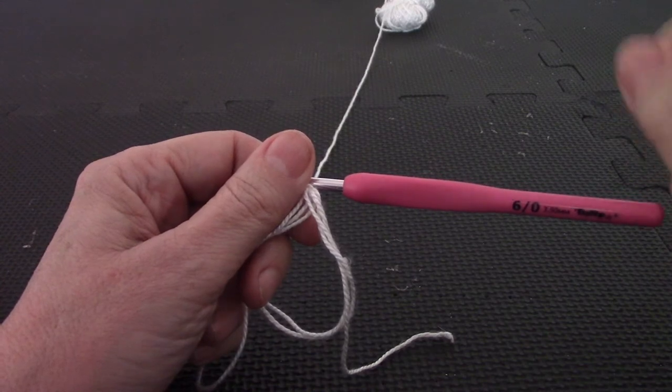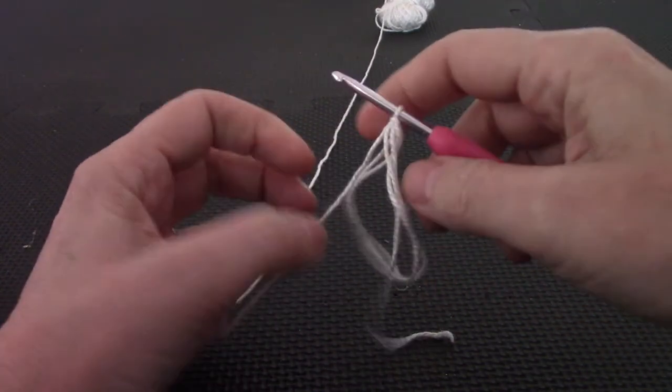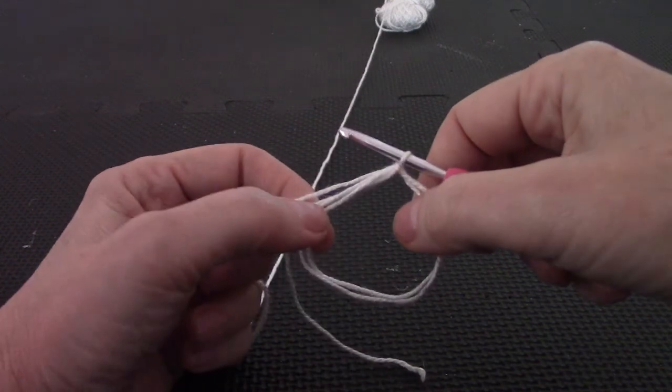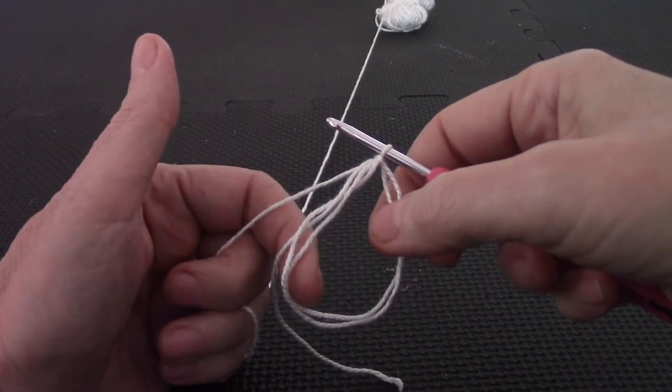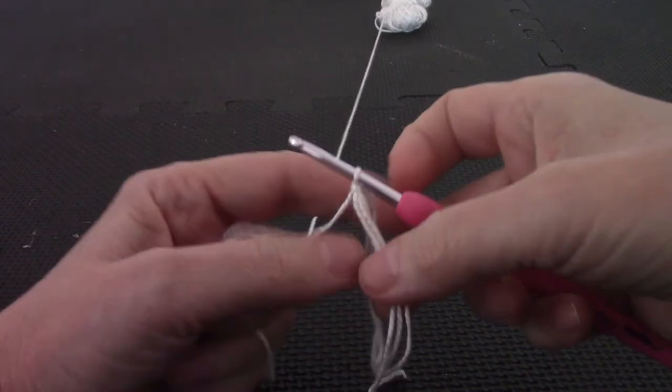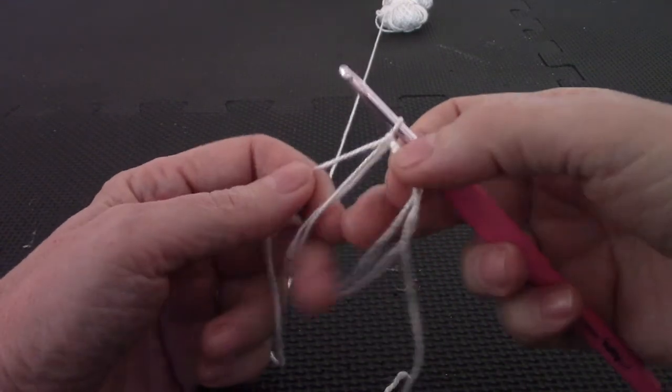First important point: you crochet away from the tail. So if it was looking like this, then you would know your magic loop is the wrong way around. Turn it back. You need to crochet away from the tail.